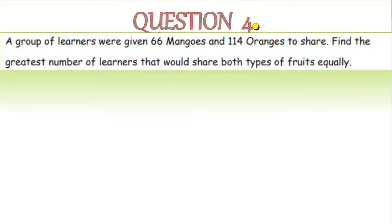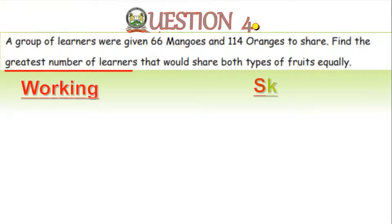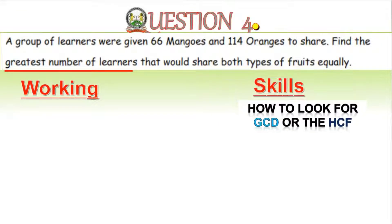Question four: a group of learners were given 66 mangoes and 114 oranges to share. Find the greatest number of learners that would share both types of fruits equally. The skill here is finding the GCD or highest common factor.